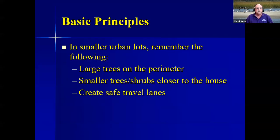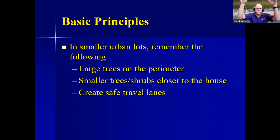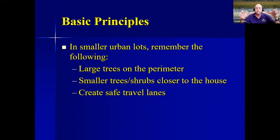Some basic principles: in smaller urban lots, put larger trees on the perimeter, smaller trees and shrubs closer to the house, feeders, and birdbath. You want to create safe travel lanes. Birds don't come flying in at 300-400 feet and dive down to feeders — they land on the tops of the tallest trees, look around for threats and food, then work their way down step by step. This also means they have cover and shelter where they can get away in a hurry.